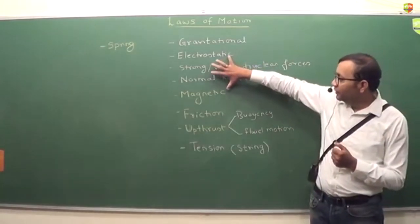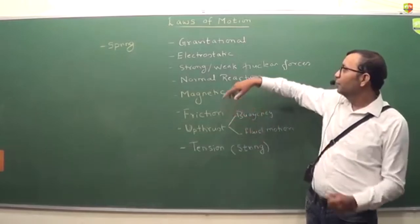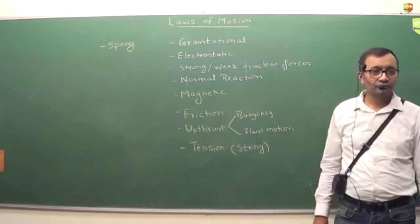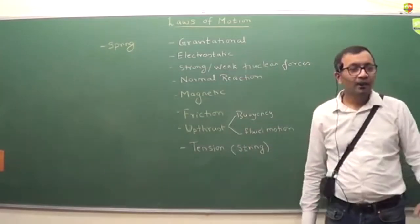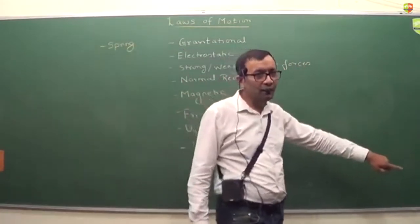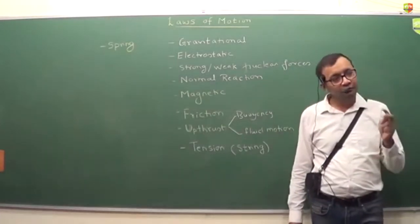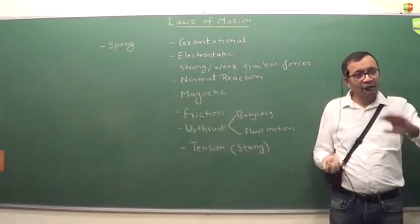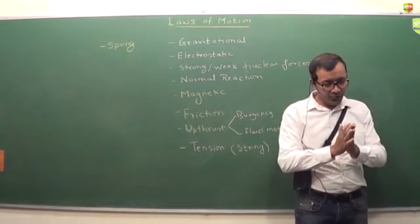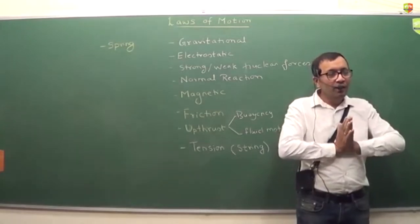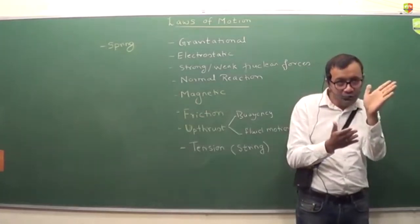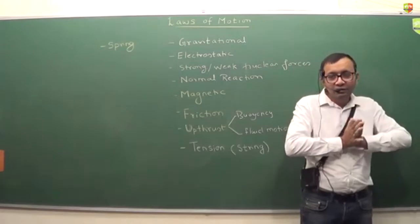The four fundamental forces are: electromagnetic force (electrostatic and magnetic), gravitation, weak nuclear, and strong nuclear — that's it. Your friction is electrostatic force only, but we will not treat it like electrostatic force; we will treat it differently. Every other force is a derived form of these four. For example, when you are pushing one hand against the other, you experience a force because electrons from this hand repel the electrons from that hand — that is electrostatic force.